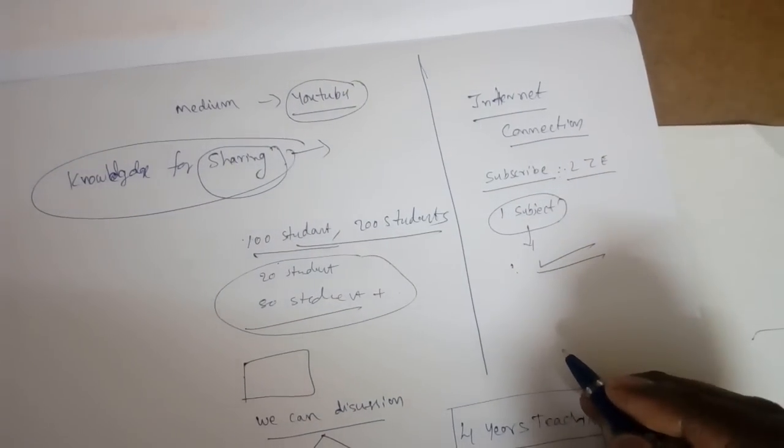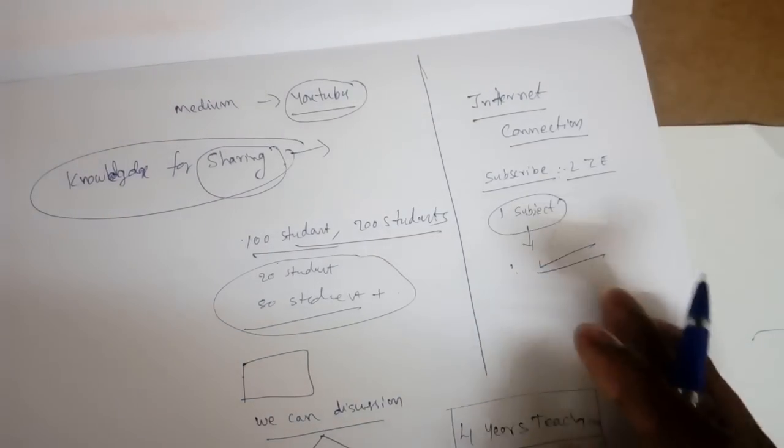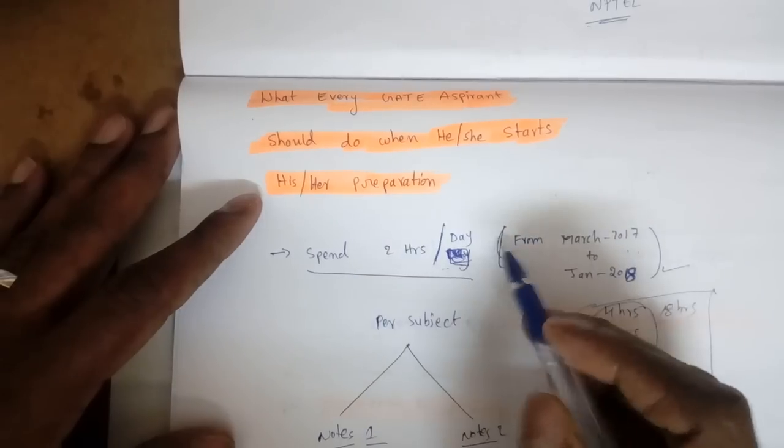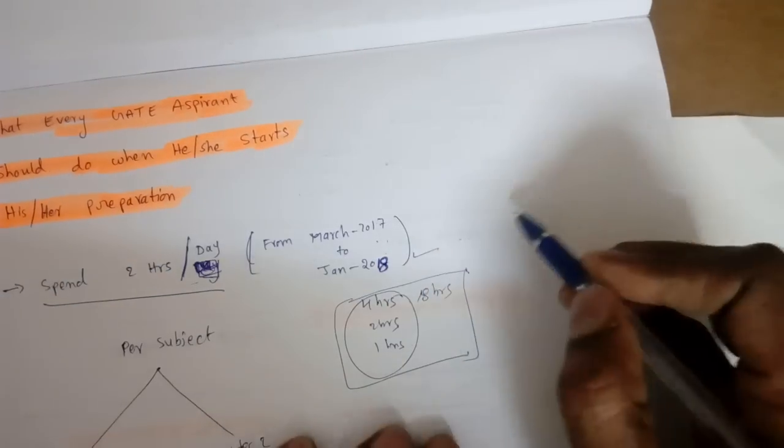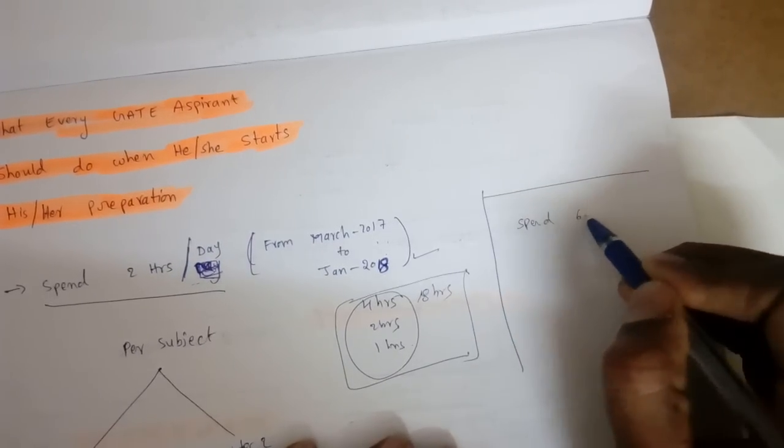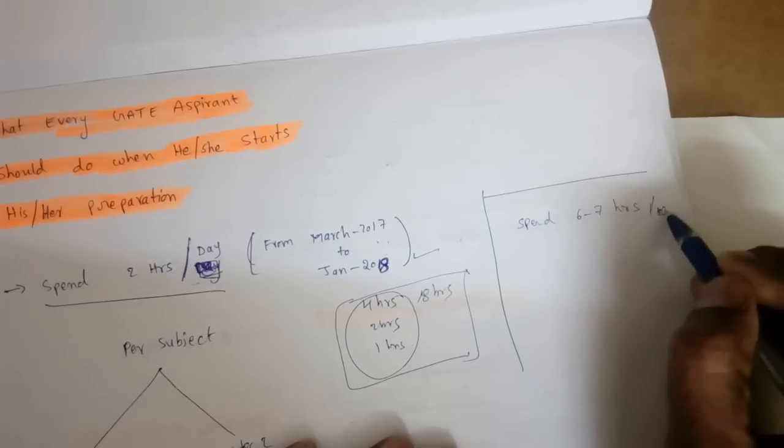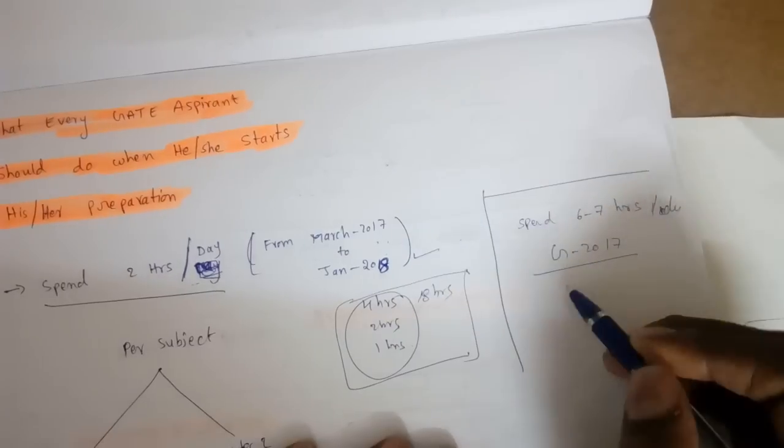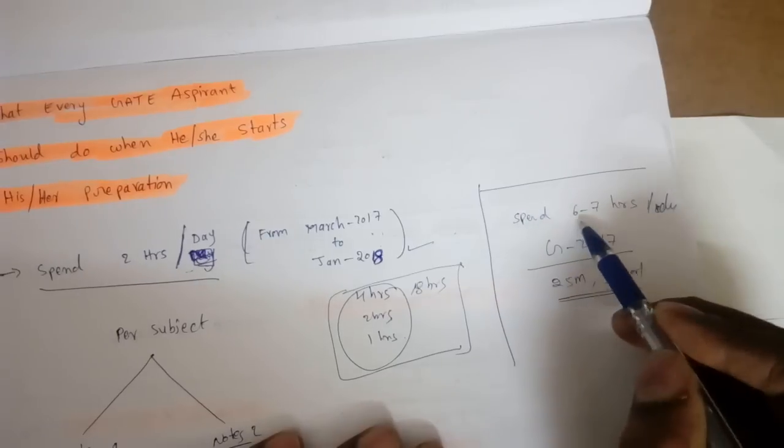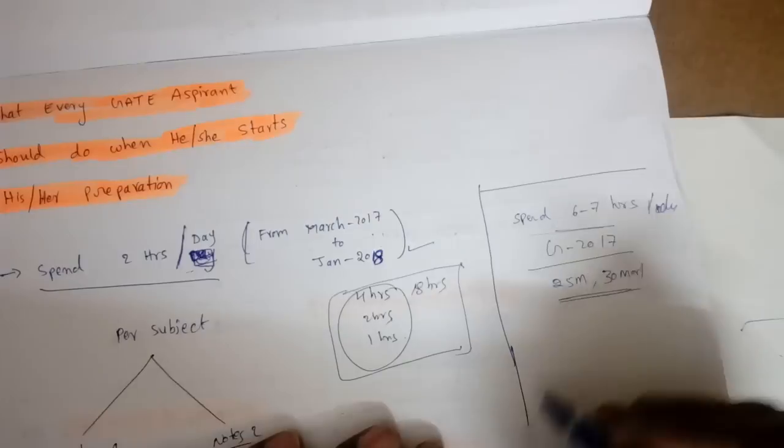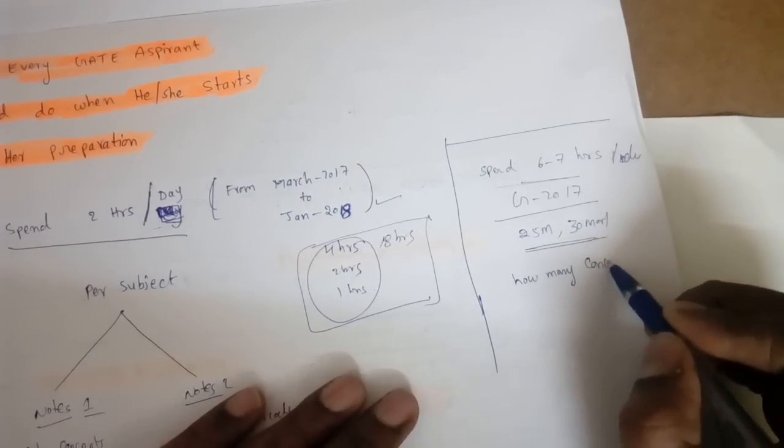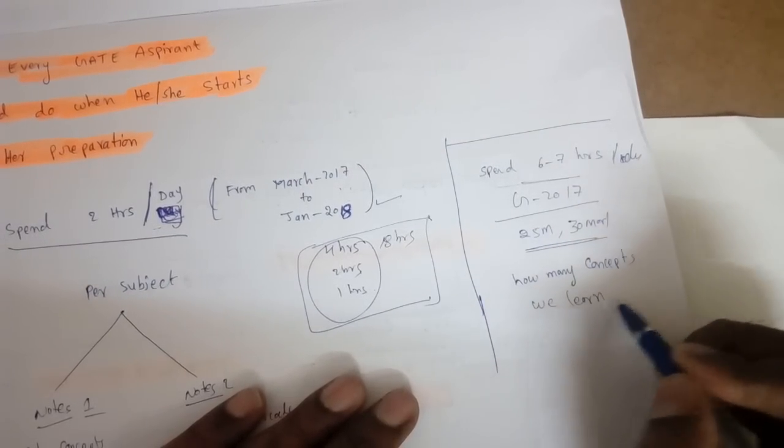Remember, we have to go for always two notebooks and two hours per day. Some students are saying we spent six to seven hours per day in GATE 2017 but did not score much, like 25 marks or 30 marks. It's not about how much hours you spend. It is about how many concepts we learn properly.